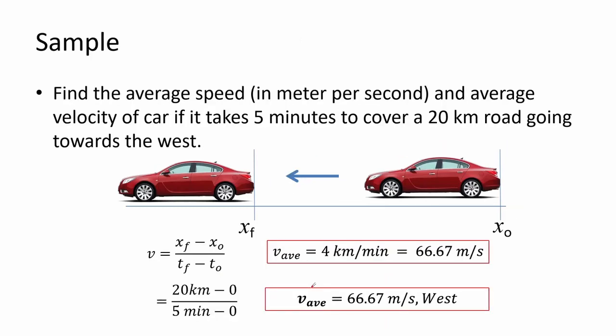Find the average speed and average velocity of a car if it takes 5 minutes to cover a 20-kilometer road going towards the west. Recall the equation for speed. Here we assume that the initial position and time starts at 0 then moves towards westward. So it is simply 20 kilometers divided by 5 minutes. This yields 4 kilometers per minute or around 66 meters per second.